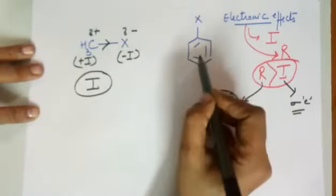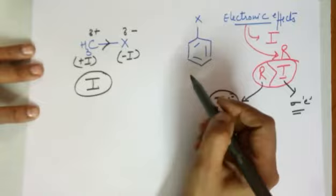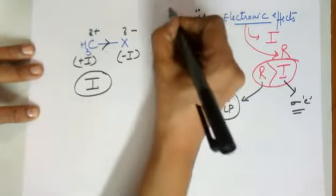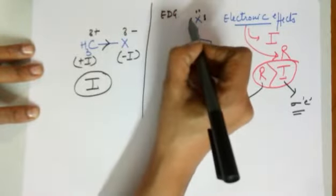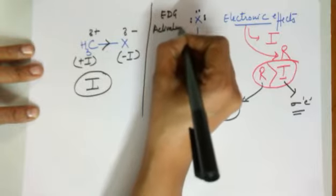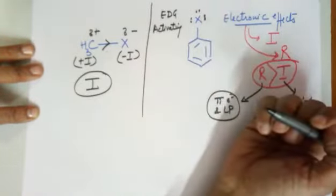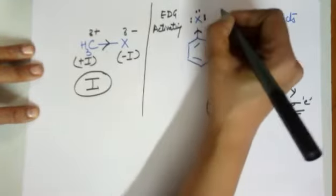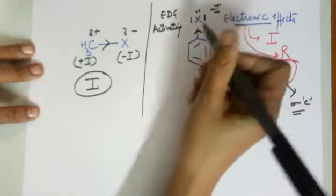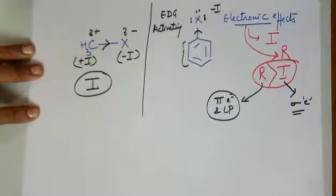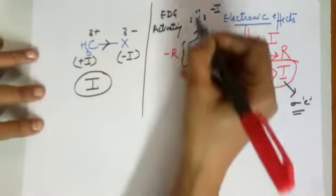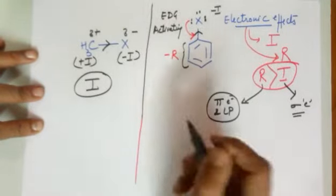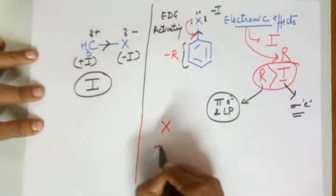When we come to the electronic effects in halobenzene, the halogen has lone pairs. Whenever the halogen attached to benzene has lone pairs, it becomes an electron-donating group — also called an activating group. It donates electrons towards the benzene ring by the resonance effect. The shared pair of sigma electrons is still pulled by halogen giving a minus-I effect, but benzene pulls the lone pair electrons by resonance so benzene has a minus-R effect on halogen, which gives its lone pair to benzene.